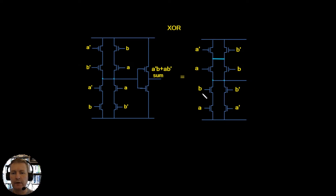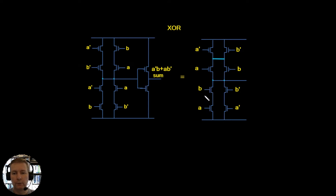Alternatively, if both inputs were high, then the complemented values would be low and this point would again be pulled low. So if we get a zero-zero or a one-one we're going to get a zero out. If one is a zero and the other is a one, one transistor will be turned on and the other turned off, so this point would be pulled high. This gives us pull-down logic for an exclusive OR, and we just mirror the pull-down logic with the pull-up logic above.